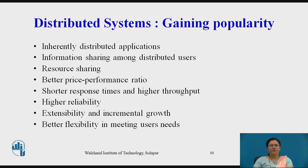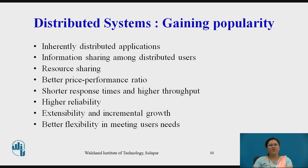We will see the gaining popularity of distributed systems. First, inherently distributed applications — several applications are inherently distributed in nature, such as the airline distribution system. Second, information sharing among distributed users — person-to-person sharing of information over great distances is possible. Third, resource sharing — sharing of software resources such as software libraries and databases, as well as hardware resources such as printers and hard disks, are allowed. Fourth, a better price-performance ratio is one important reason for the gaining popularity of distributed systems.